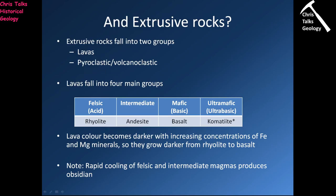Those produced during explosive eruptions are referred to as either pyroclastic or volcanoclastic rocks — the two terms are pretty much interchangeable.